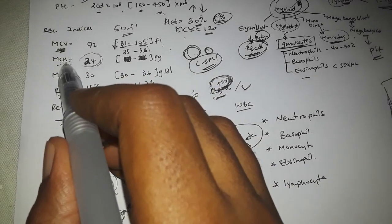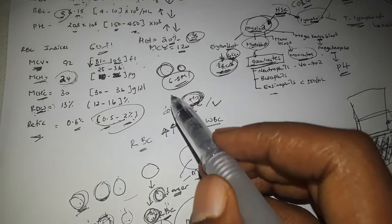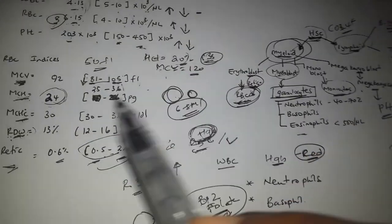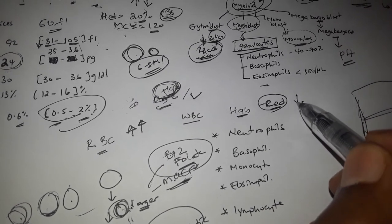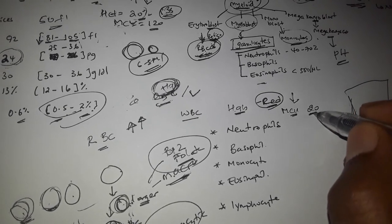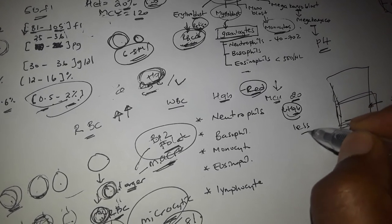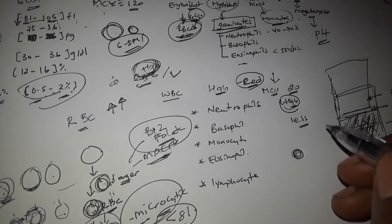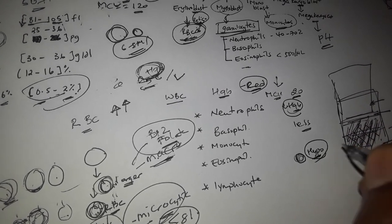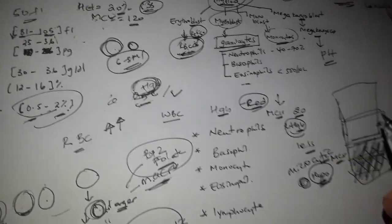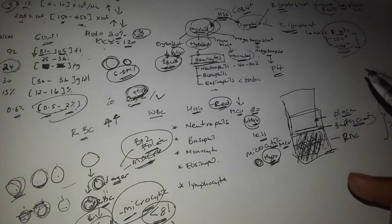This is the clinical application: in iron deficiency anemia, the cells are microcytic and hypochromic. Hemoglobin gives red blood cells their red color, so when hemoglobin is low, the cells appear pale. This pattern — small pale cells — is characteristic of microcytic hypochromic anemia.